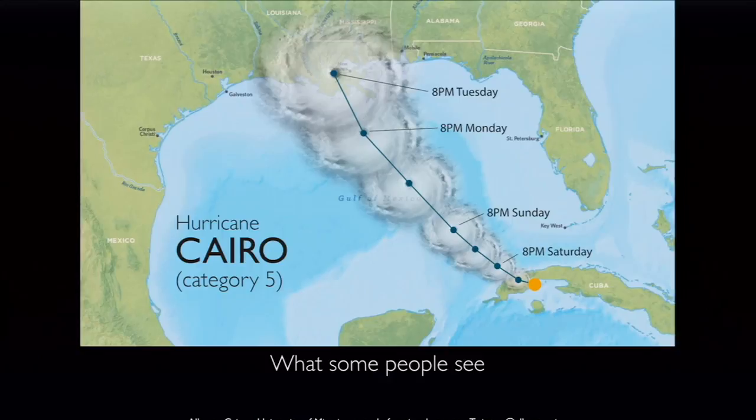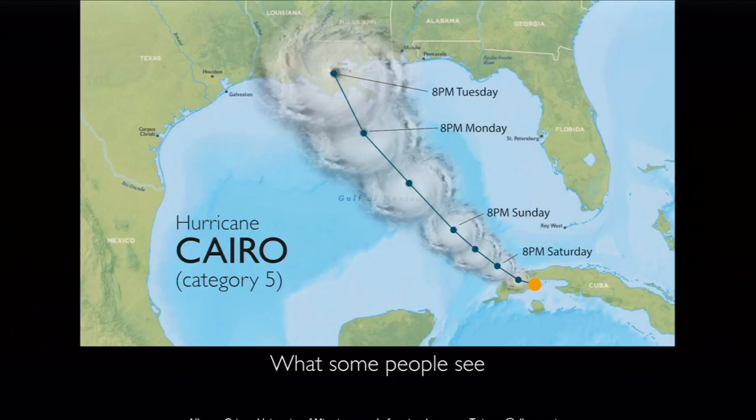People are not stupid — that's an idea we need to abandon. There is a reason why many people believe the cone represents the size of the storm: there is a pictorial resemblance between the shape of the hurricane cone, which is rounded, and the shape of an actual hurricane. So your brain automatically makes the connection intuitively and unconsciously. But obviously the map represents the possible paths of the hurricane, not its physical size.